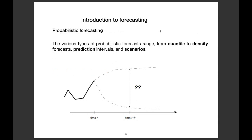Concerning probabilistic forecasting, there are various types used in practical case studies, ranging from quantile to density forecasts, but also prediction intervals and scenarios. We are at time T, having gathered information about our stochastic process — for instance, for a PV generation plant, we have weather information such as solar irradiation, air temperature, clouds, the plant location, and maintenance planning. Based on this, we want to predict the PV generation at time T plus K.